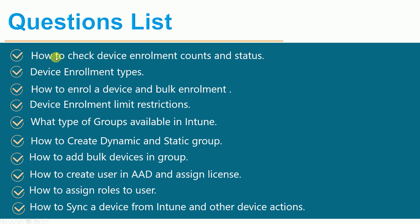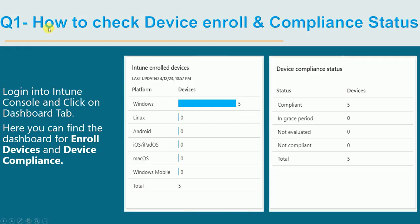Here is the question list: how to check the device enrollment status and count, device enrollment types, how to handle a device and bulk enrollment, device enrollment limit restrictions, what types of groups are available in Intune and how to create dynamic and static groups, how to add bulk devices in a group, how to create a user in AD and assign the license, how to assign a role to the user, and how to sync a device from Intune and the other actions you can take for your device.